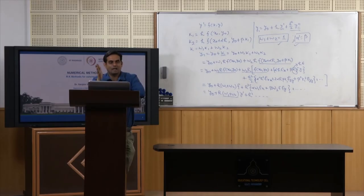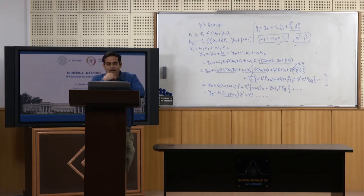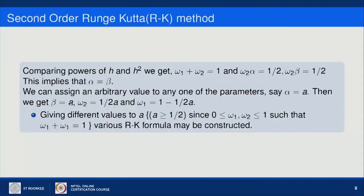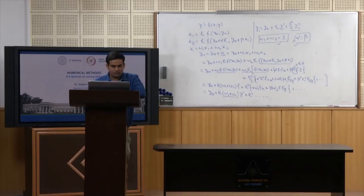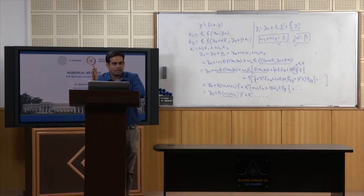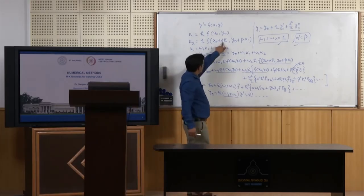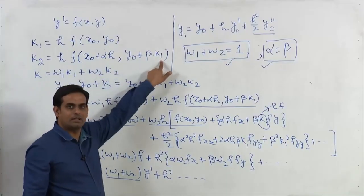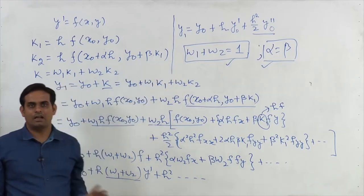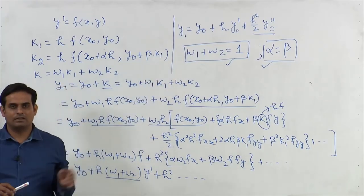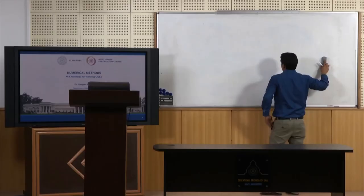For example, the classical RK method of order 2 is obtained by taking α = β = 1, i.e., a = 1. Then ω₁ = 1/2, ω₂ = 1/2, and k₂ = h·f(x₀ + h, y₀ + k₁), which is the standard Runge-Kutta method of order 2.